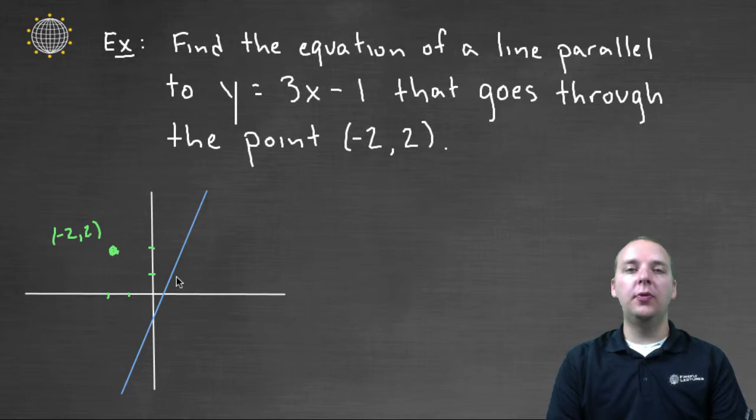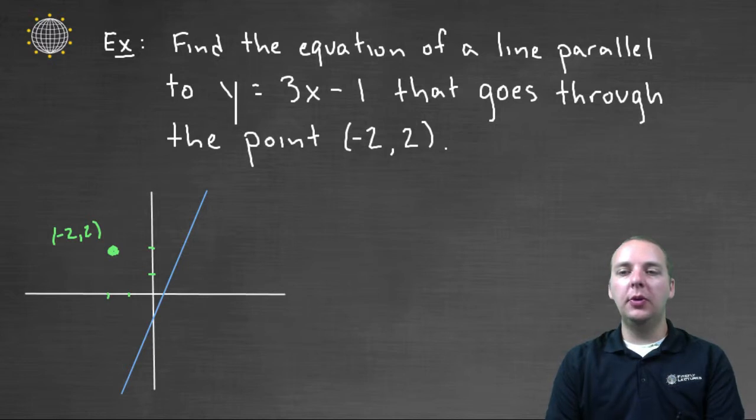And then they'll ask you for the equation of a new line that's parallel to the blue line, but that goes through the new point that they provided. So before we really do anything, can you look at this picture here, and can you visualize what it is they want?